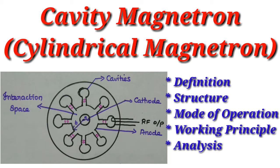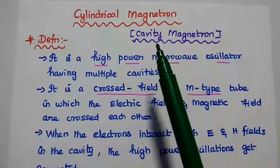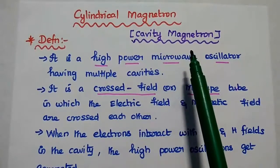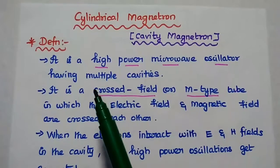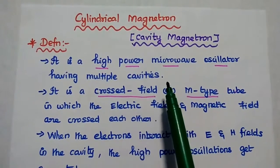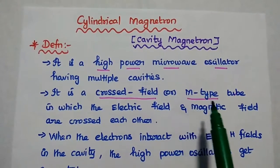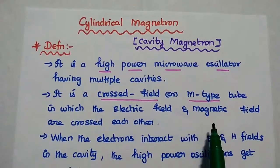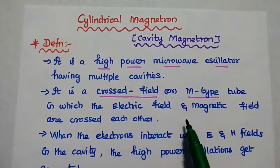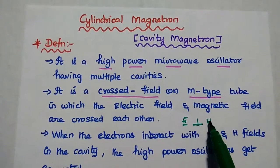Now we are going to discuss cylindrical cavity magnetron and its working principle in detail. Cylindrical magnetron is also called as cavity magnetron. It is a high power microwave oscillator which has multiple resonant cavities. It is a crossed field tube or M type tube, meaning the electric field and magnetic field are perpendicular to each other.